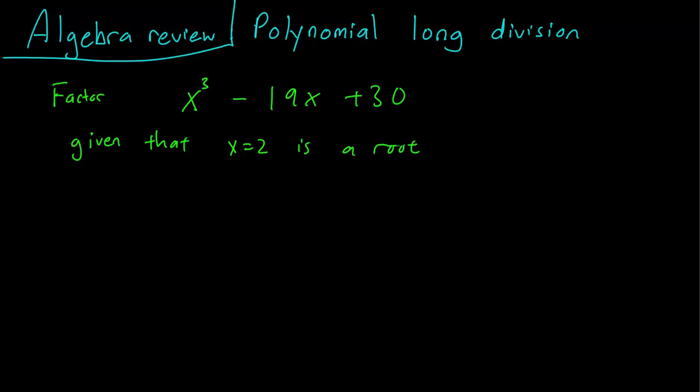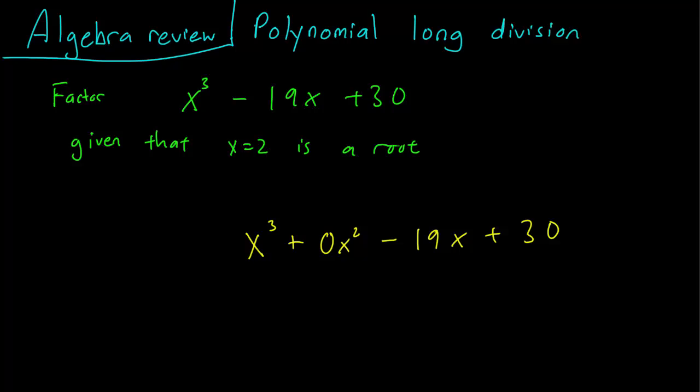So let's say that we have a polynomial like so. The key is to write down the polynomial in such a way that all the terms are represented. So even though there's no x squared term in the polynomial, we put a zero there anyway.